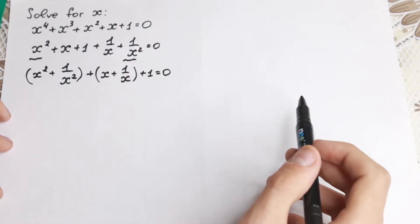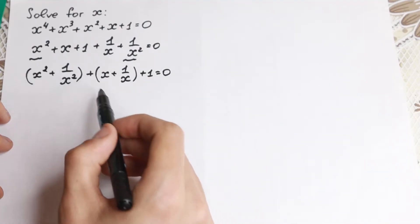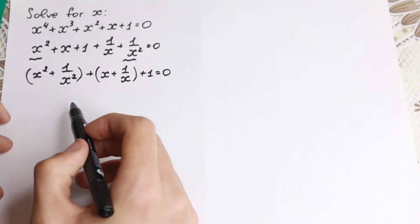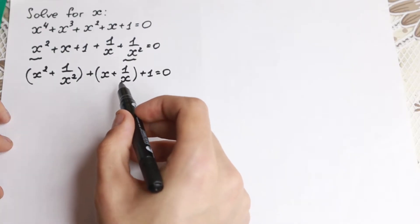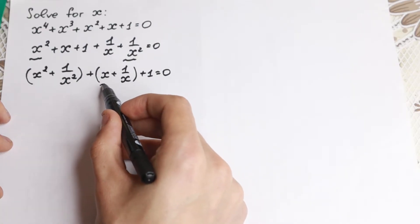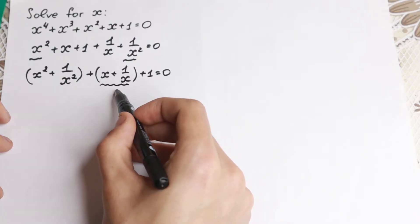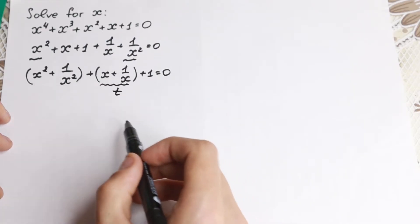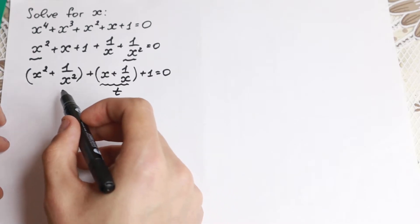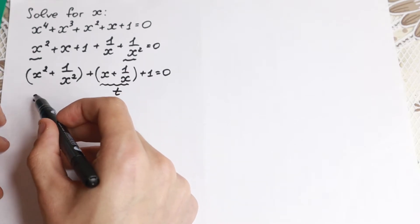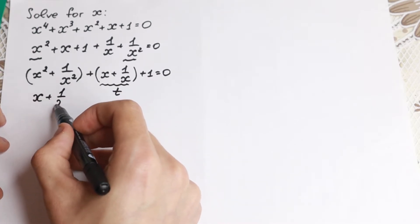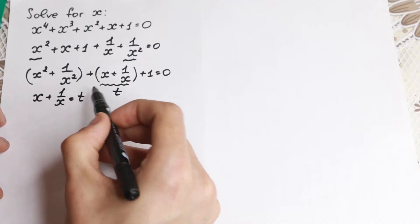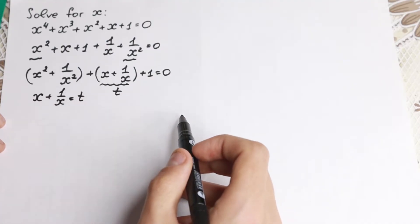If we look closely, we have the same elements appearing — but here we have squares. So we go with a substitution: let x plus 1/x equal to t.